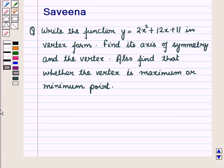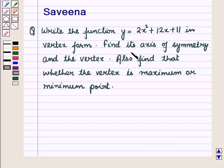Hello and welcome to the session. In this session we will discuss a question which says: write the quadratic function given by y is equal to 2x squared plus 12x plus 11 in vertex form. Find its axis of symmetry and the vertex. Also find whether the vertex is a maximum or minimum point.